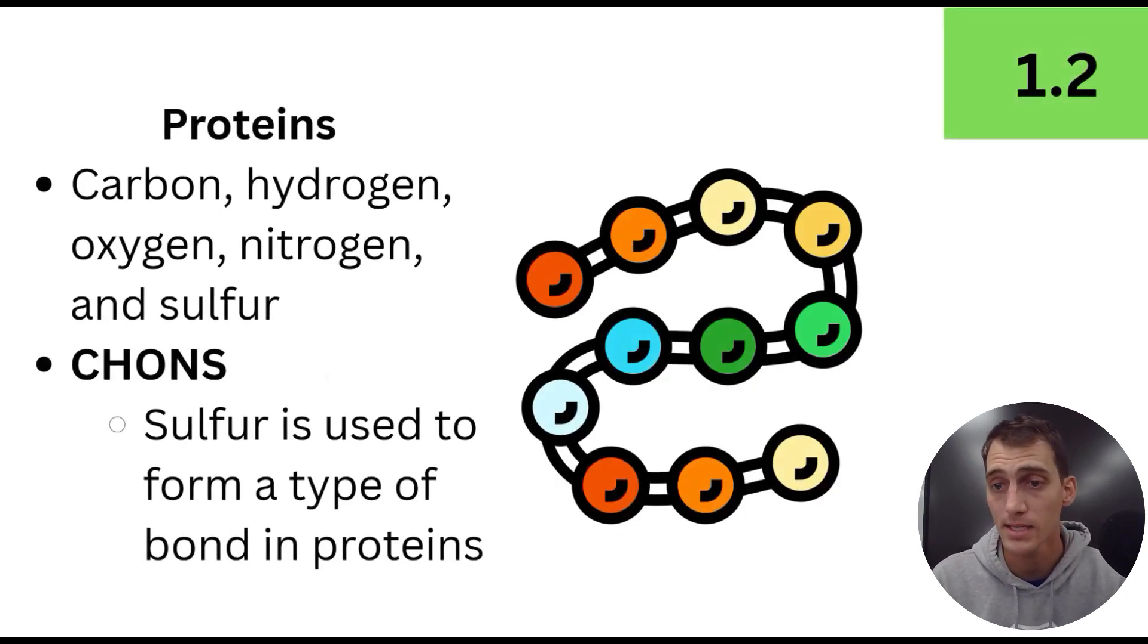In proteins, all right, this gets a little more complicated. You're going to find some carbon, hydrogen, oxygen, but then you're also going to find some nitrogen in each of those individual amino acids. We're going to look at those later. And we're also going to find some sulfur. Sulfur is used to form a type of bond in proteins that we're going to be looking at later. They're called disulfide bridges. And so thus the five primary elements that you're going to find in proteins are carbon, hydrogen, oxygen, nitrogen, sulfur, CHONS, as my freshman bio class used to put it.